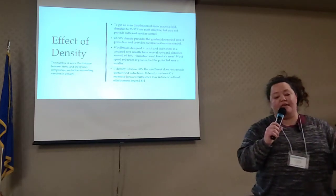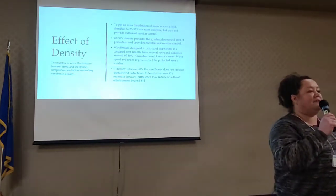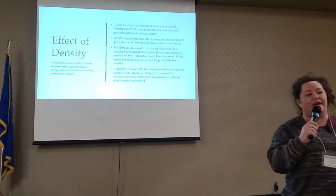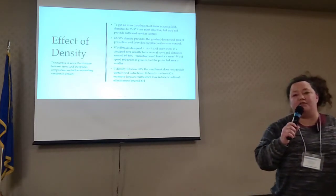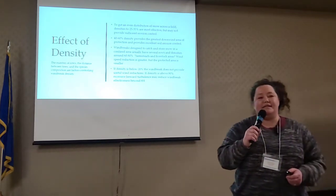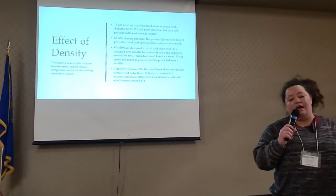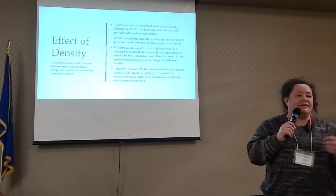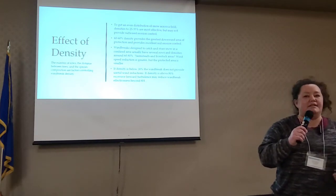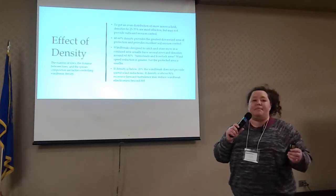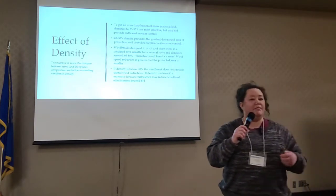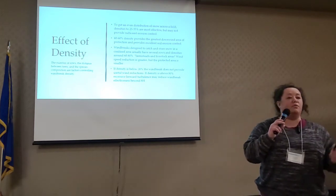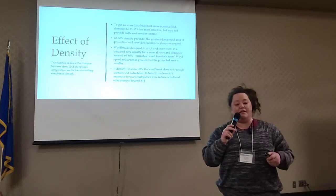Our biggest thing that we're doing — usually farmstead windbreaks — when we're planning for protection for those, we want to make sure that our farmstead windbreaks, when they're at that 20-year tree height, are anywhere between 60 and 80% density. And if you're doing erosion control across the field, you're looking for 25 to 35%. All of this is determined by the species that you select and how close you plant them. Each plan that you guys do will be unique to the site that you are planning for.